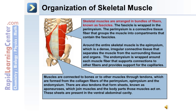Muscles are connected to bones or other muscles through tendons. Tendons are formed from the collagen fibers of the peramycium, epamycium, and endomycium. There are also tendons that form sheets known as aponeurosis, which join muscles to the body parts that those muscles act on. These sheets are present in the ventral abdominal cavity, for example.